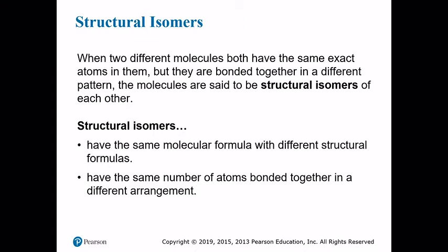Halogen substituents are the easier part, so we'll save that for later. One way to understand alkyl substituents is by understanding structural isomers. When two different molecules have the exact same atoms but are bonded together in a different pattern, they are said to be structural isomers. Structural isomers have the same molecular formula — identical in terms of which elements and how many — but if you draw out their structure, you'll see a different arrangement of bonds.